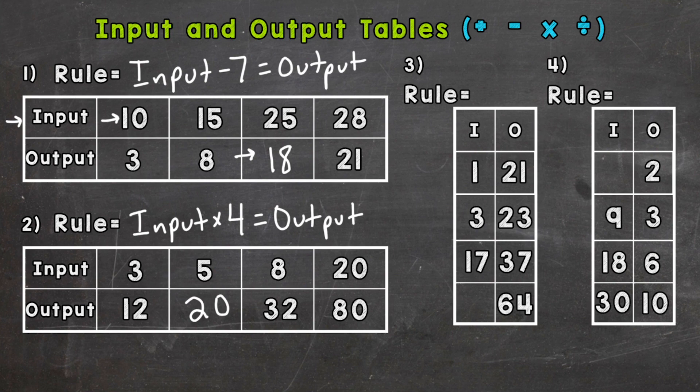We're going from 1 to 21, 3 to 23, 17 to 37, so we're increasing in value. It's going to be addition or multiplication. How do we get 1 to equal 21? Well, we could add 20. Let's see if it works for the others.